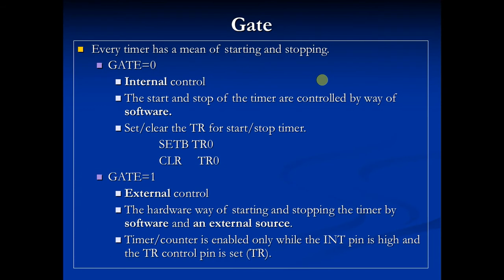Every timer has a means of starting and stopping, which is done by the gate bit. If the gate bit is equal to 0, it means internal control — the start and stop of the timer are controlled by software. Software sets or clears the TR bit to start or stop the timer. This TR will be studied in the T-con register. So the gate bit determines whether to start or stop the timer from software or an external source.